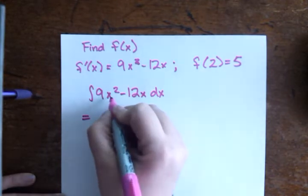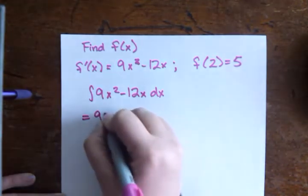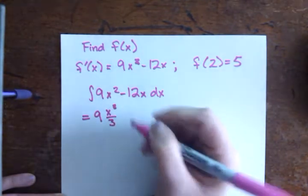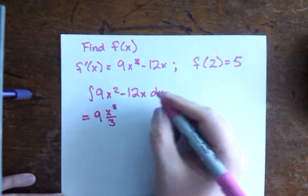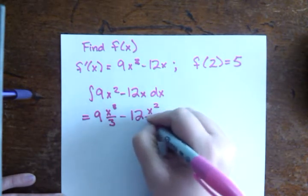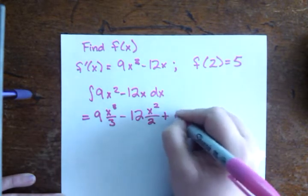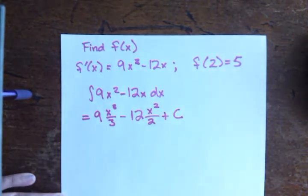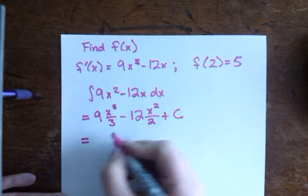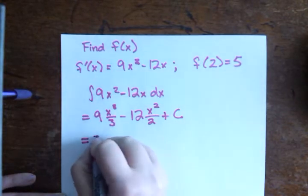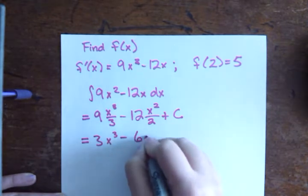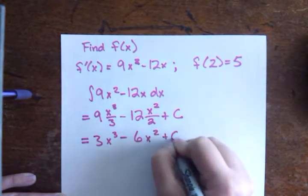So I am going to have 9 times x cubed over 3. I've raised the exponent by 1 and copied that exactly down into the denominator, minus 12 times x squared over 2 plus c. And we can simplify that a bit, so let's go ahead and do that, because it's going to make our lives easier in the long run. So 9 divided by 3, that's going to give me 3x cubed minus 6x squared plus c.